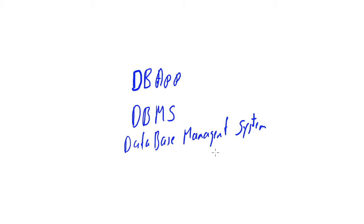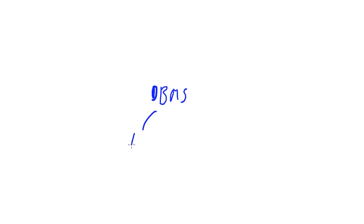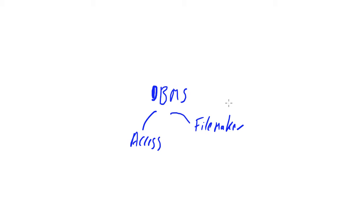Where does Access fit? Basically, if we look at the range of DBMS applications, Access is one of them. Access is pretty much at the lower end of database applications — it is suited for small to medium sized databases, so basically databases for a small company or for a certain project. Another database application similar to Access in terms of market position is FileMaker, or FileMaker Pro. It used to belong to Apple, but Apple spun it out as a separate company. It's also a very good program.